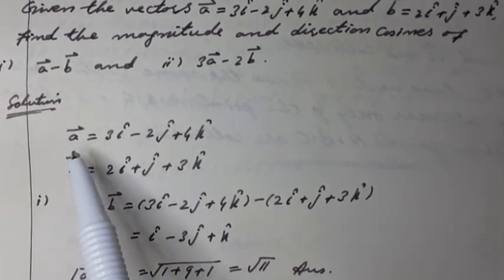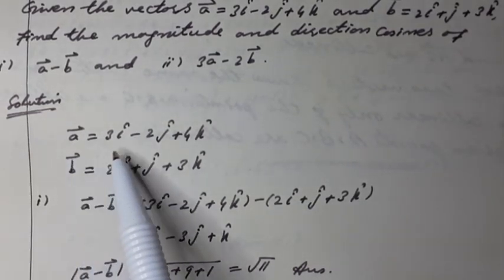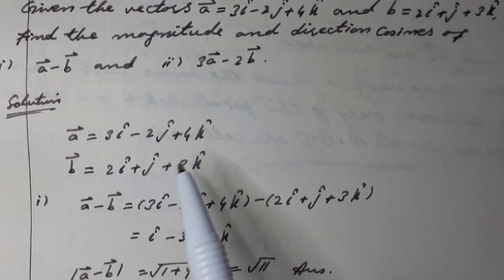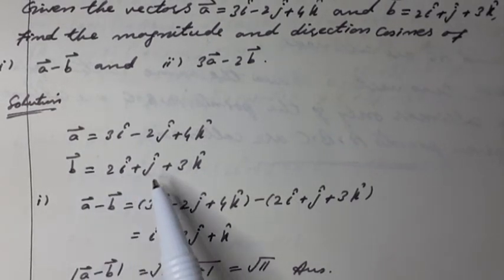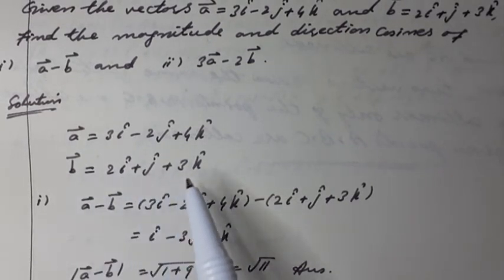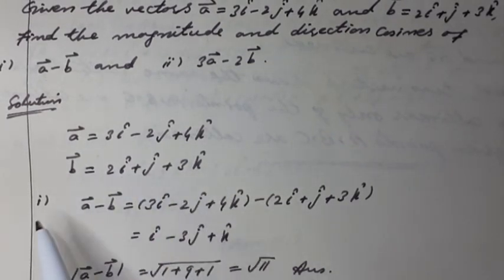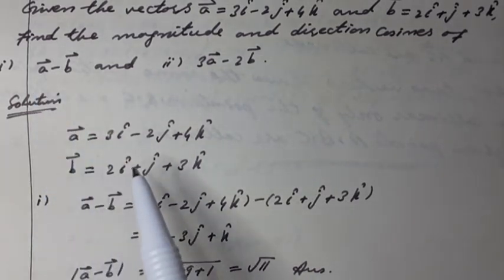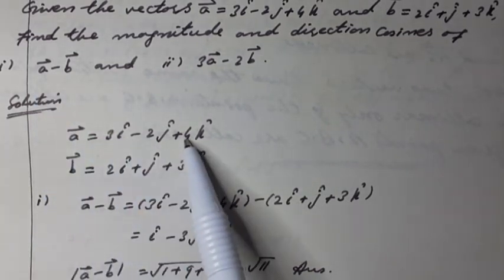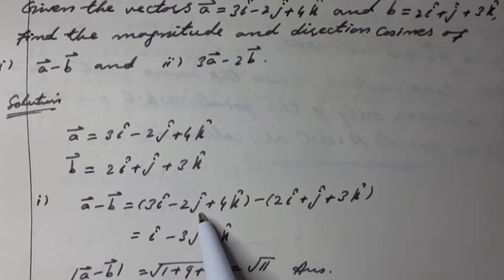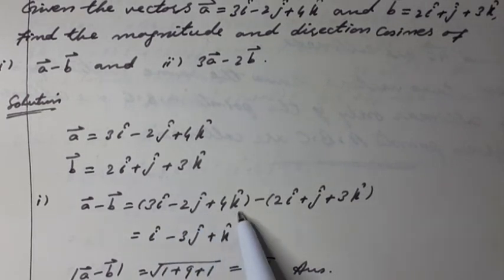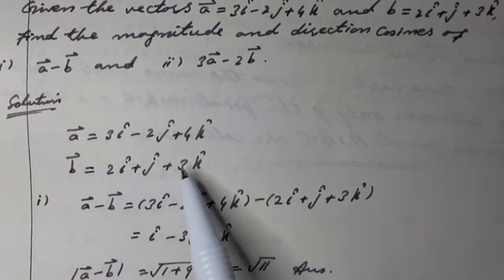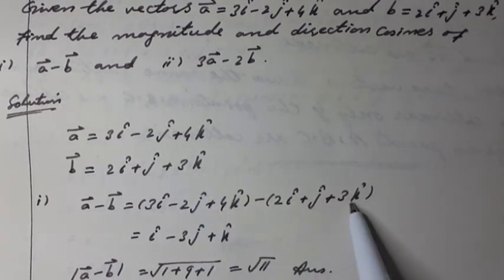Solution: here a vector is equal to 3i unit vector minus 2j unit vector plus 4k unit vector, and b vector is equal to 2i unit vector plus j unit vector plus 3k unit vector. First part: a vector minus b vector equals (3i unit vector minus 2j unit vector plus 4k unit vector) minus (2i unit vector plus j unit vector plus 3k unit vector).